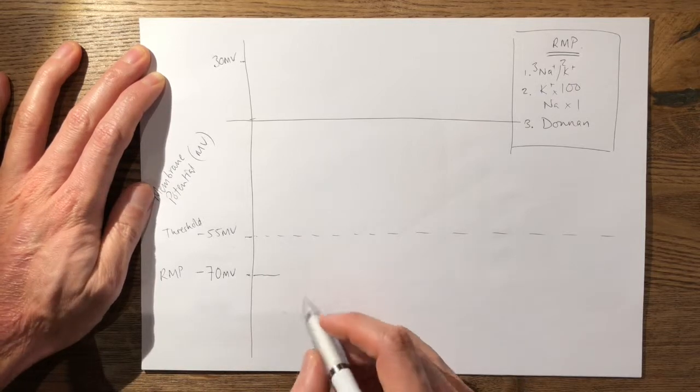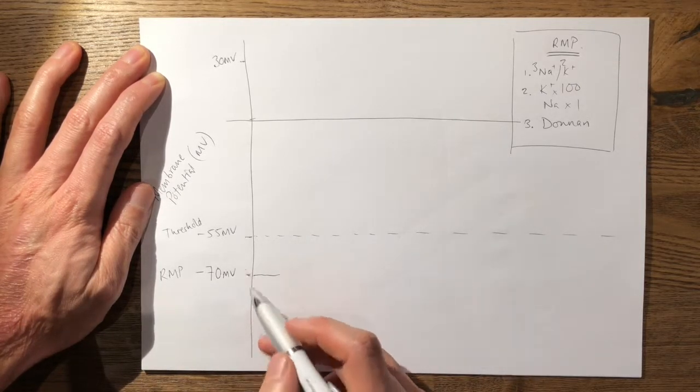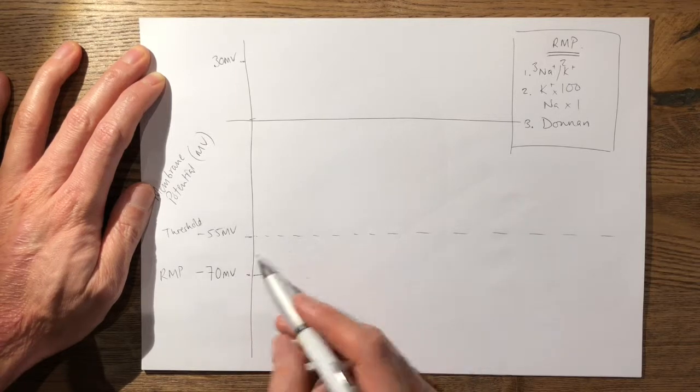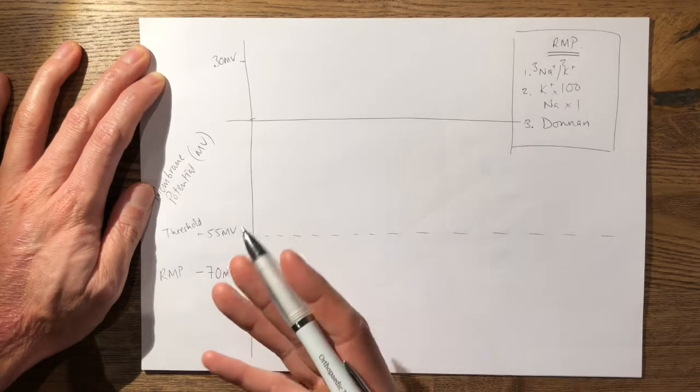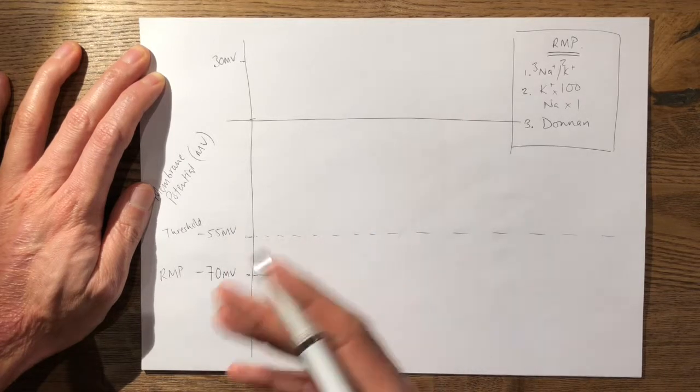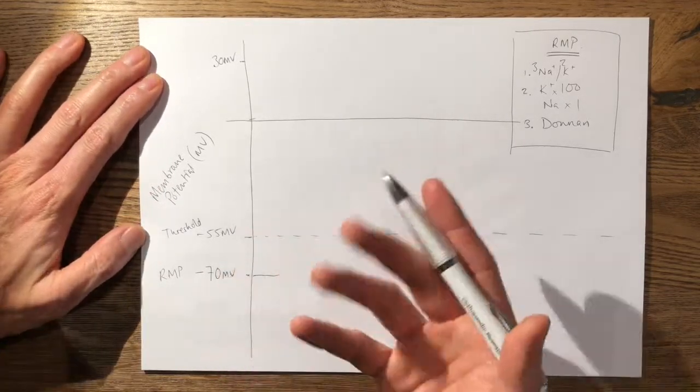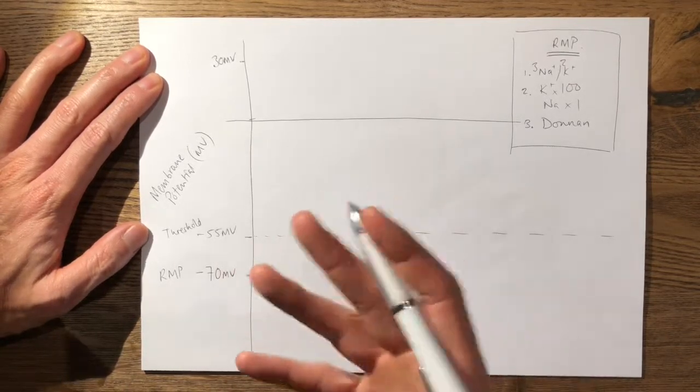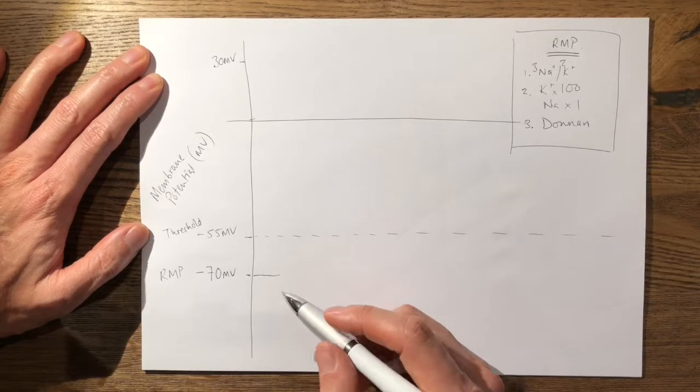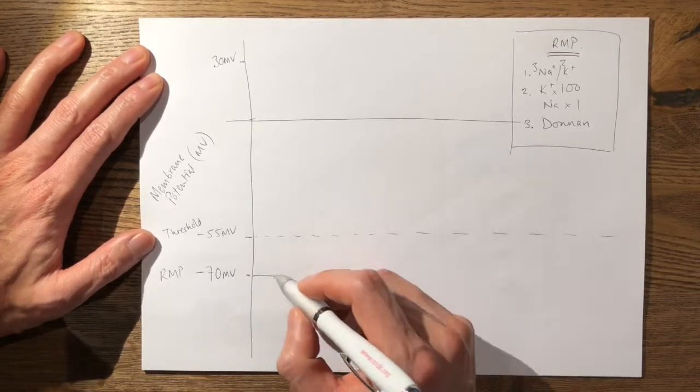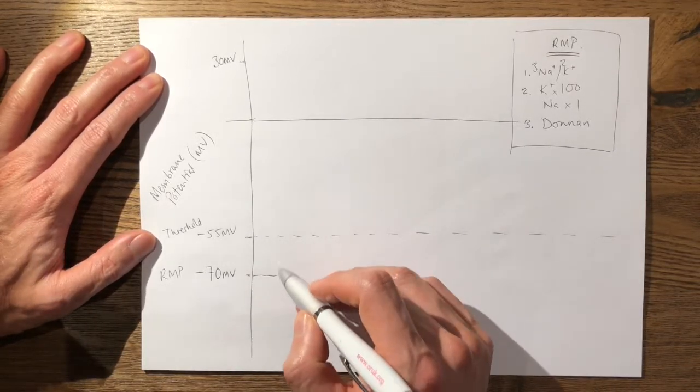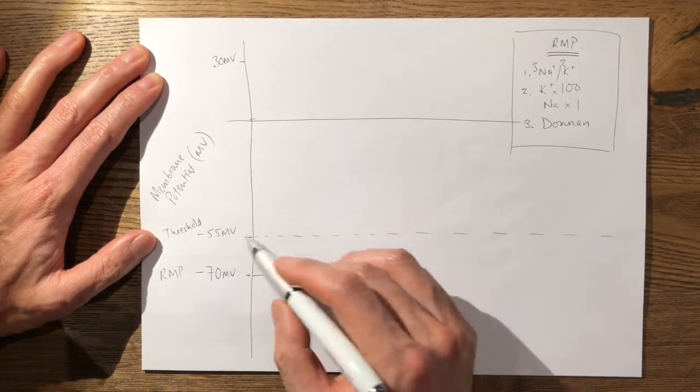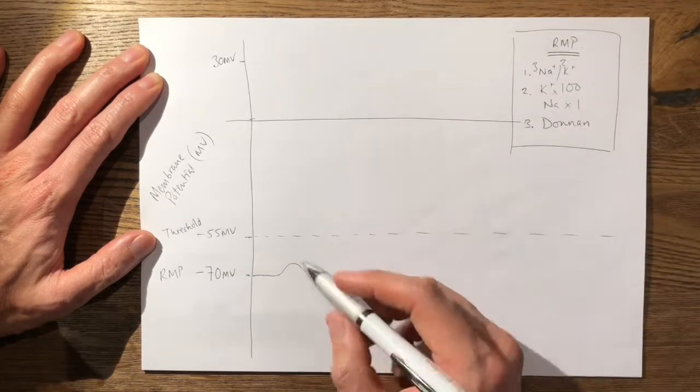Then you have a stimulus which will cause a blip in the resting membrane potential. Now this stimulus can be a mechanical stimulus, or it can be a summation of multiple smaller stimuli to achieve the threshold stimulus, or usually it's as a result of binding of neurotransmitters on the postsynaptic membrane. So either one of these stimuli can cause the threshold to cause an action potential.